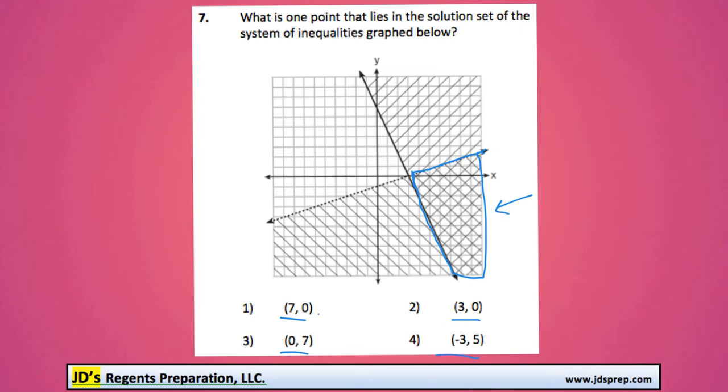Let's take a look at (7, 0). Well, I think that might be the one right there, because that's what we're looking for.